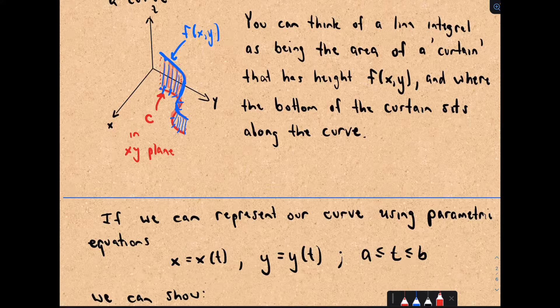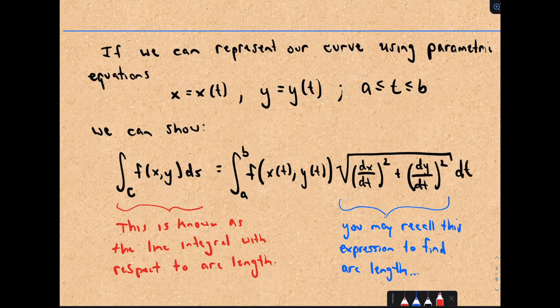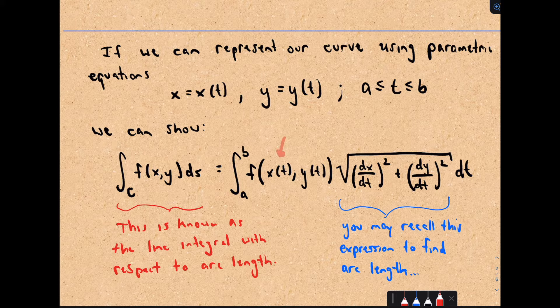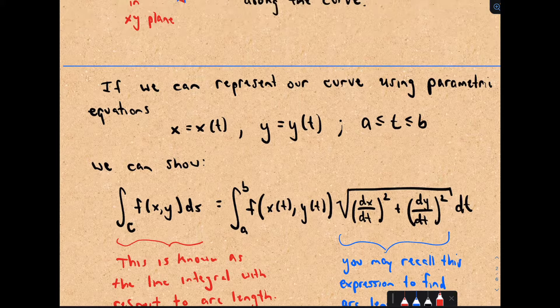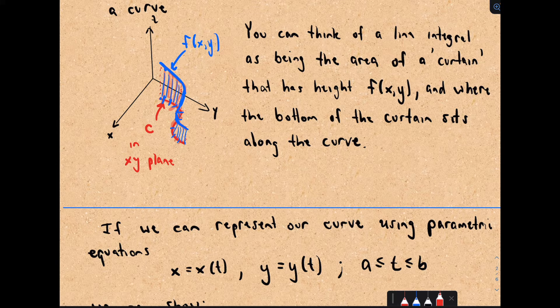The formula without proof is the following. If we're integrating over curve C of our function F(x,y) with respect to S — and you can think of S as arc length — we find a parametrization for our curve. Once we have that, if T is between A and B, we replace X with its parametrization and Y with its parametrization, then multiply by the expression sqrt((dx/dt)² + (dy/dt)²). The stuff under the square root comes from arc length. You're chopping up the curve into points, taking a point in each interval, computing the function value there, and multiplying by the width of that little segment of curve to get an estimate of that section of the curtain.